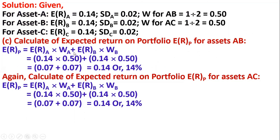The expected return for portfolio B: R_W portfolio equals W_A times W_B times the returns of A and B. Similarly, for portfolio AC, the same formula applies using assets A and C.